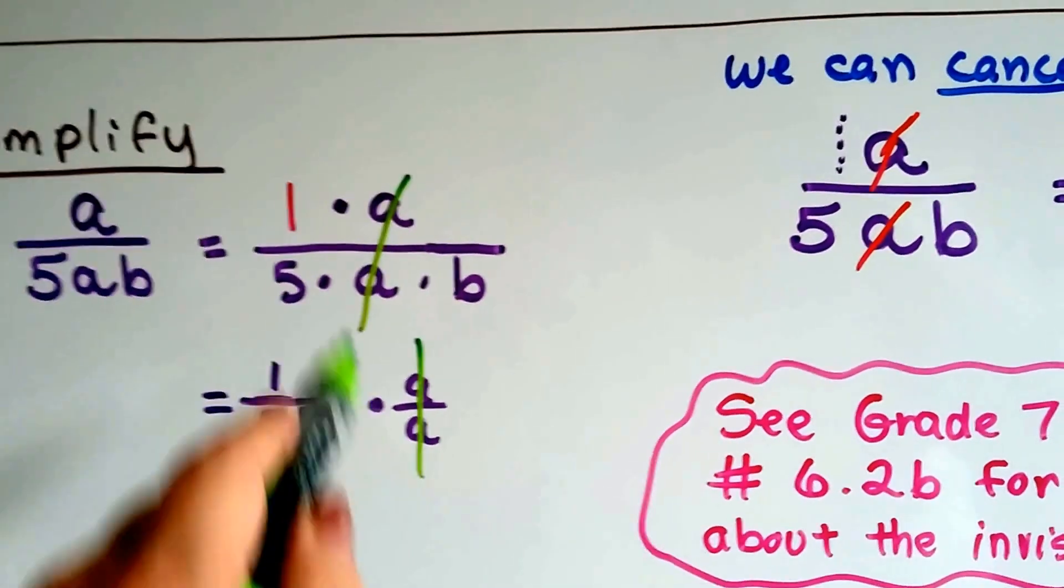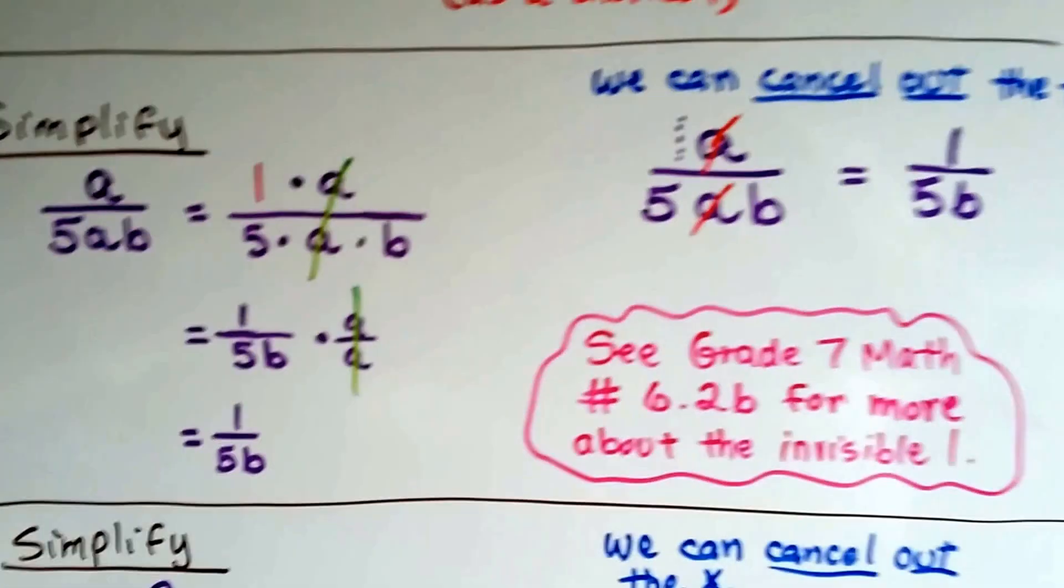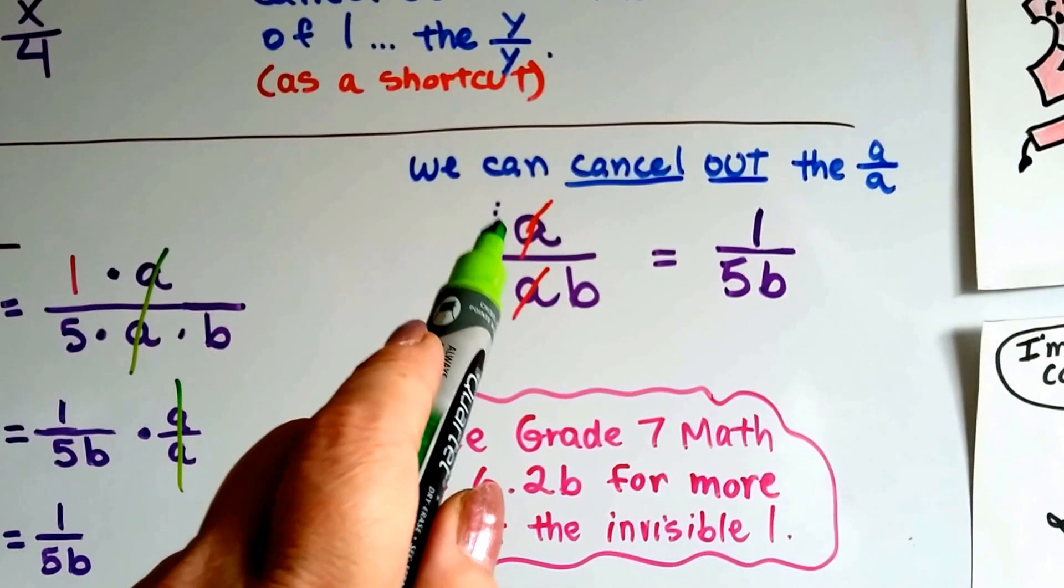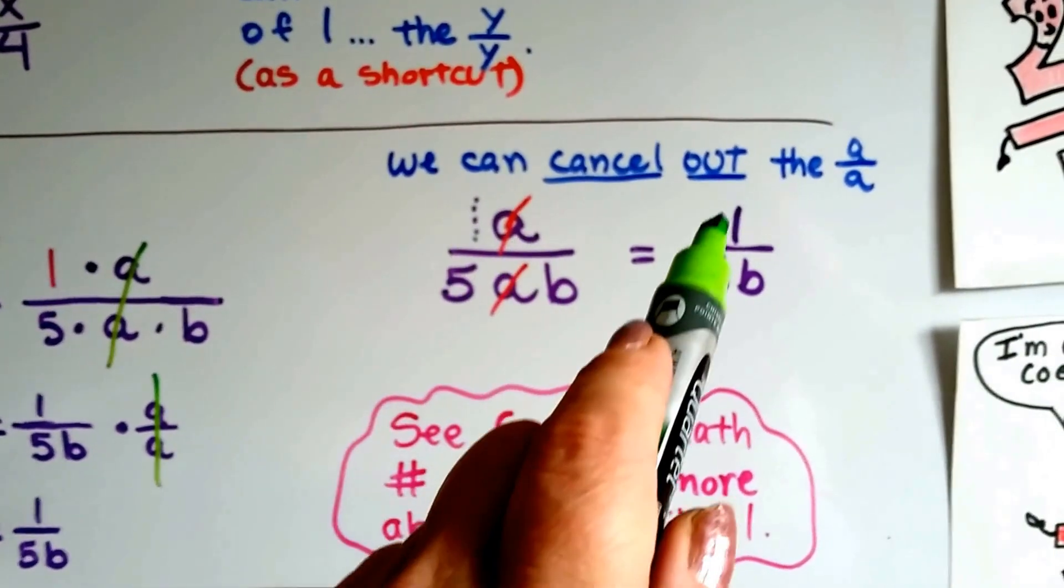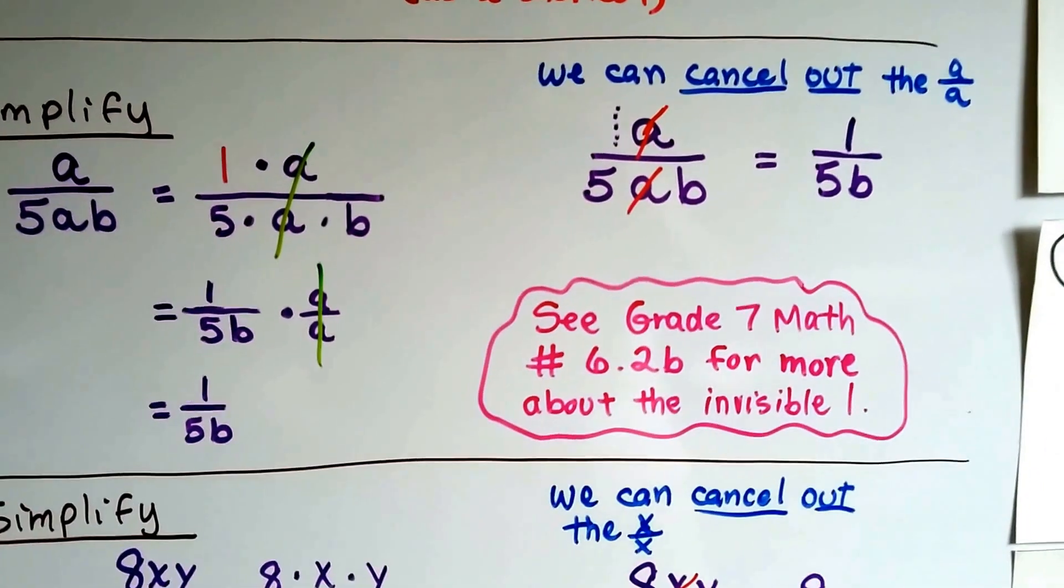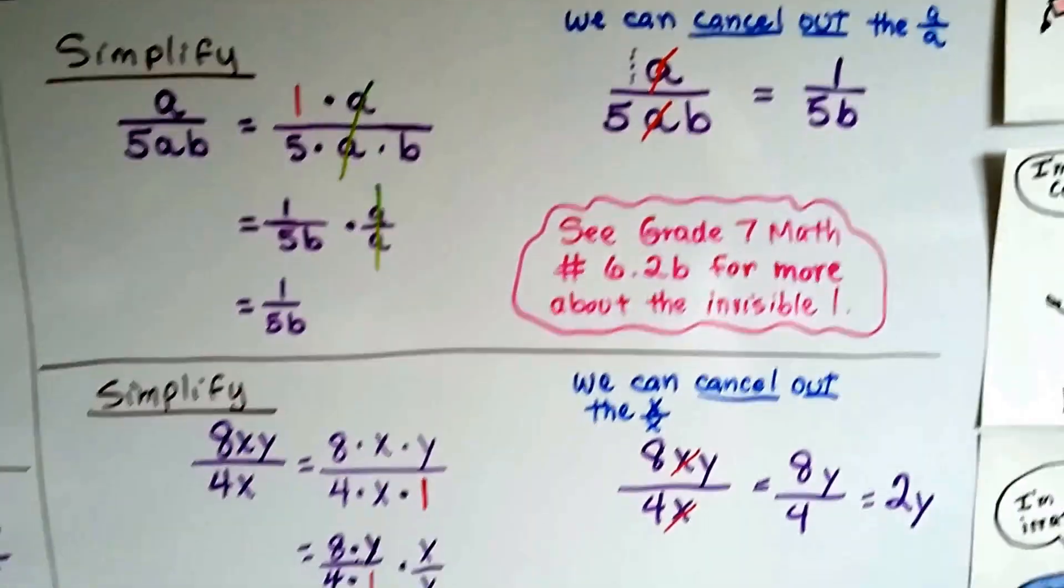Or we could have just done that and just had 1 over 5b if we want to take the shortcut. We just cross the a's out and say, there was an invisible 1 in front of that a, so we've got 1 over 5b. This is a really important video to understand about the invisible 1.